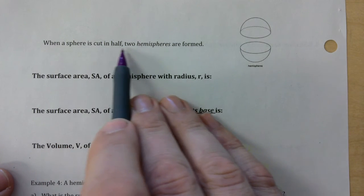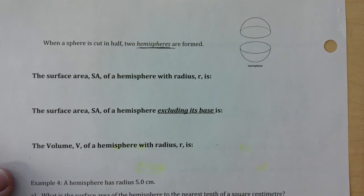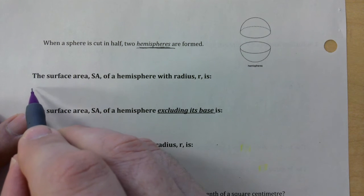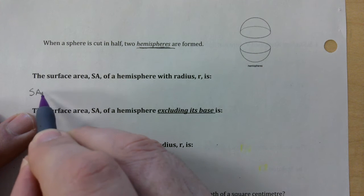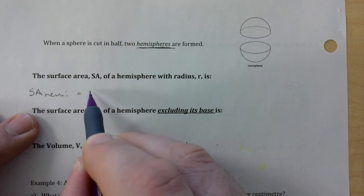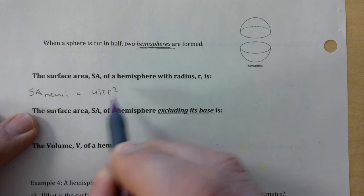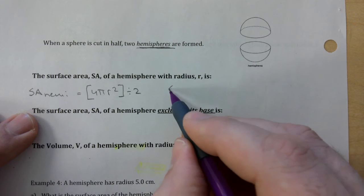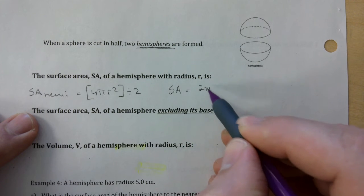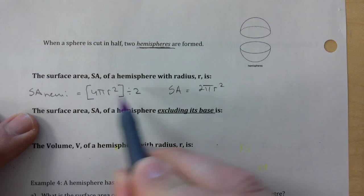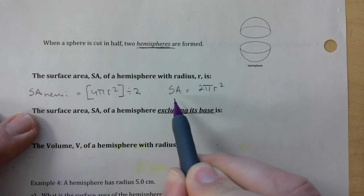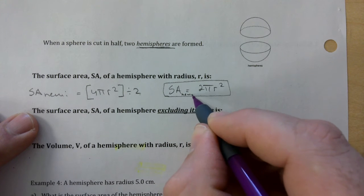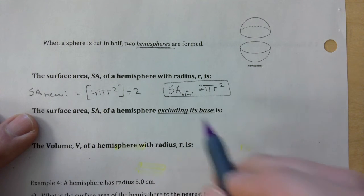When a sphere is cut in half, you get hemispheres. I've given you the formulas for that. The surface area of a hemisphere: if you think of 4πr² and take half of it, the surface area is 2πr² — because the 4 is divided by 2. Make sure you make that distinction.